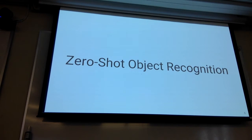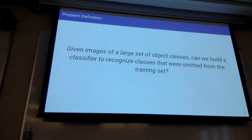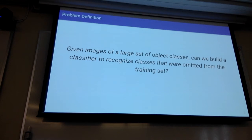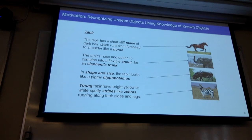The first problem we are going to discuss is zero-shot object recognition. In zero-shot object recognition, our goal is to build a classifier which can recognize objects that it has never seen before. How can we do that — how can even humans recognize objects they have never seen before?